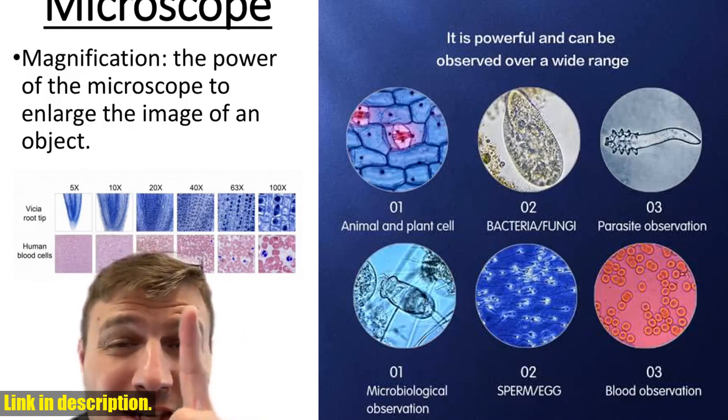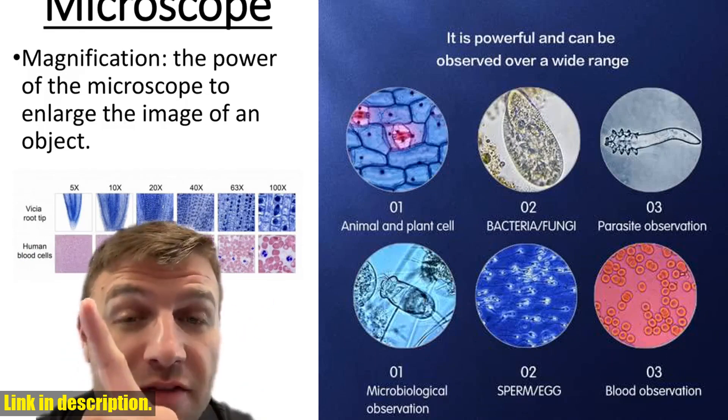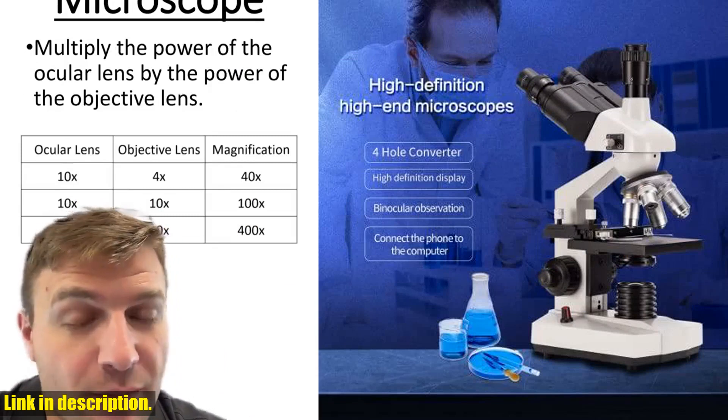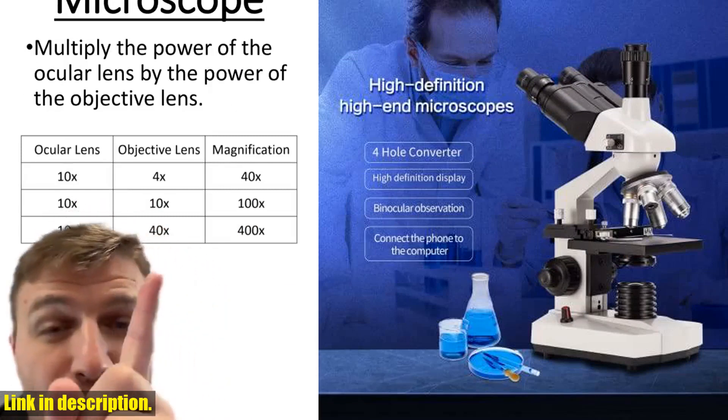Equipped with bright-field dark field, halogen illumination, and a 1.25 N.A. condenser lens, this microscope provides clear and precise inspection with light control.